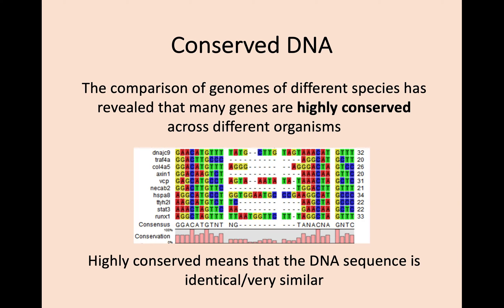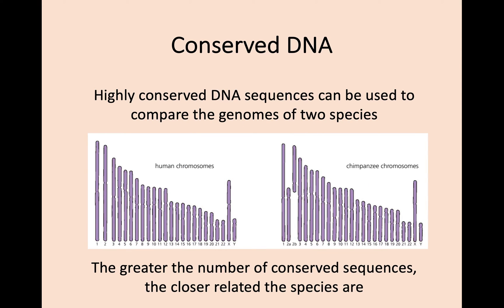When we compare genomes, we talk quite a lot about the term conserved. This means that if the DNA sequence data between two different organisms is very similar, we would say that the DNA sequence is highly conserved. For example, if you compare the human genome with a chimpanzee genome, you can see that they're very similar, so therefore the DNA sequences are highly conserved. If you share a large number of DNA sequences and are therefore highly conserved, then you're also closely related from a genetic view.